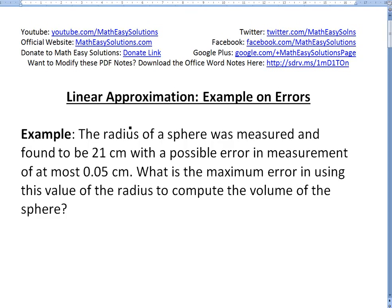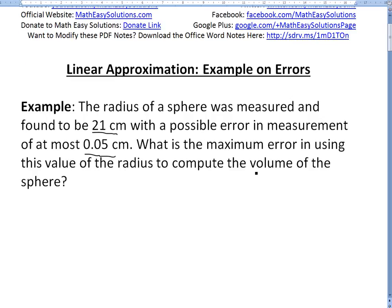I'm going to help illustrate this concept using this example which states: The radius of a sphere was measured and found to be 21 centimeters with a possible error in measurement of at most 0.05 centimeters. What is the maximum error in using this value of the radius to compute the volume of the sphere?